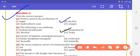Carrier of malaria causing protozoan is: female anopheles mosquito, cockroach, housefly, or butterfly. So the right answer is female anopheles mosquito.